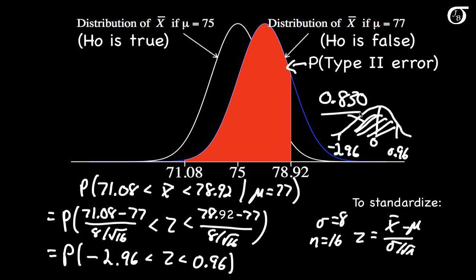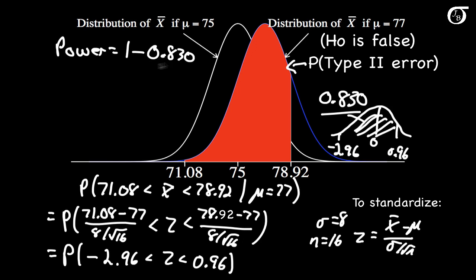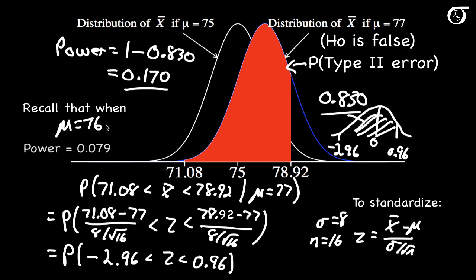If instead we wanted the power of the test, it's simply 1 minus 0.830, which is 0.170. Recall that in the previous example when mu was 76, the power was 0.079, and here when mu is 77, it's 0.170 — which is bigger. This illustrates that the power increases as the true value of mu gets farther from the hypothesized value. If the true value of mu is very different from the hypothesized value, our test is going to have high power.